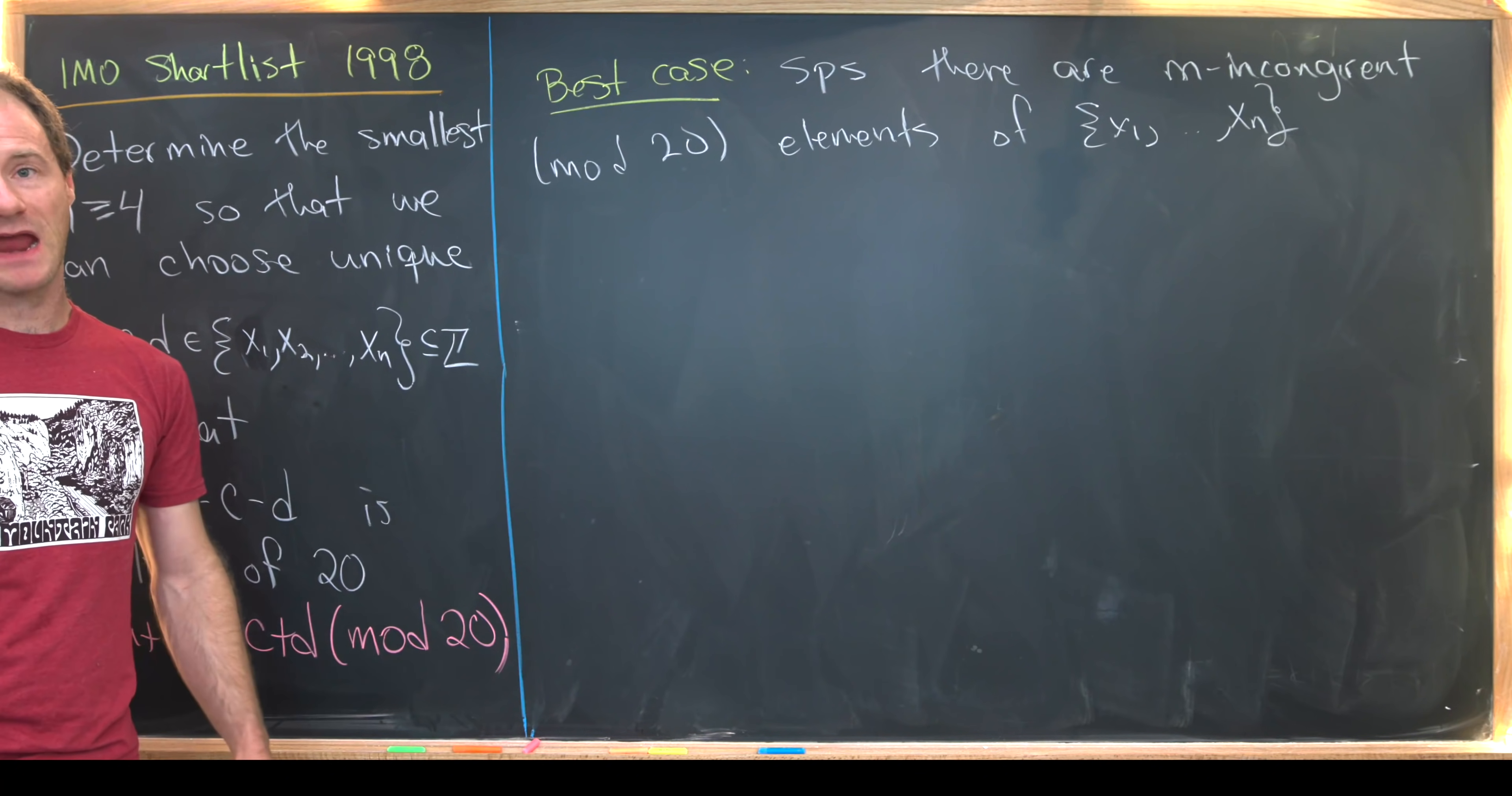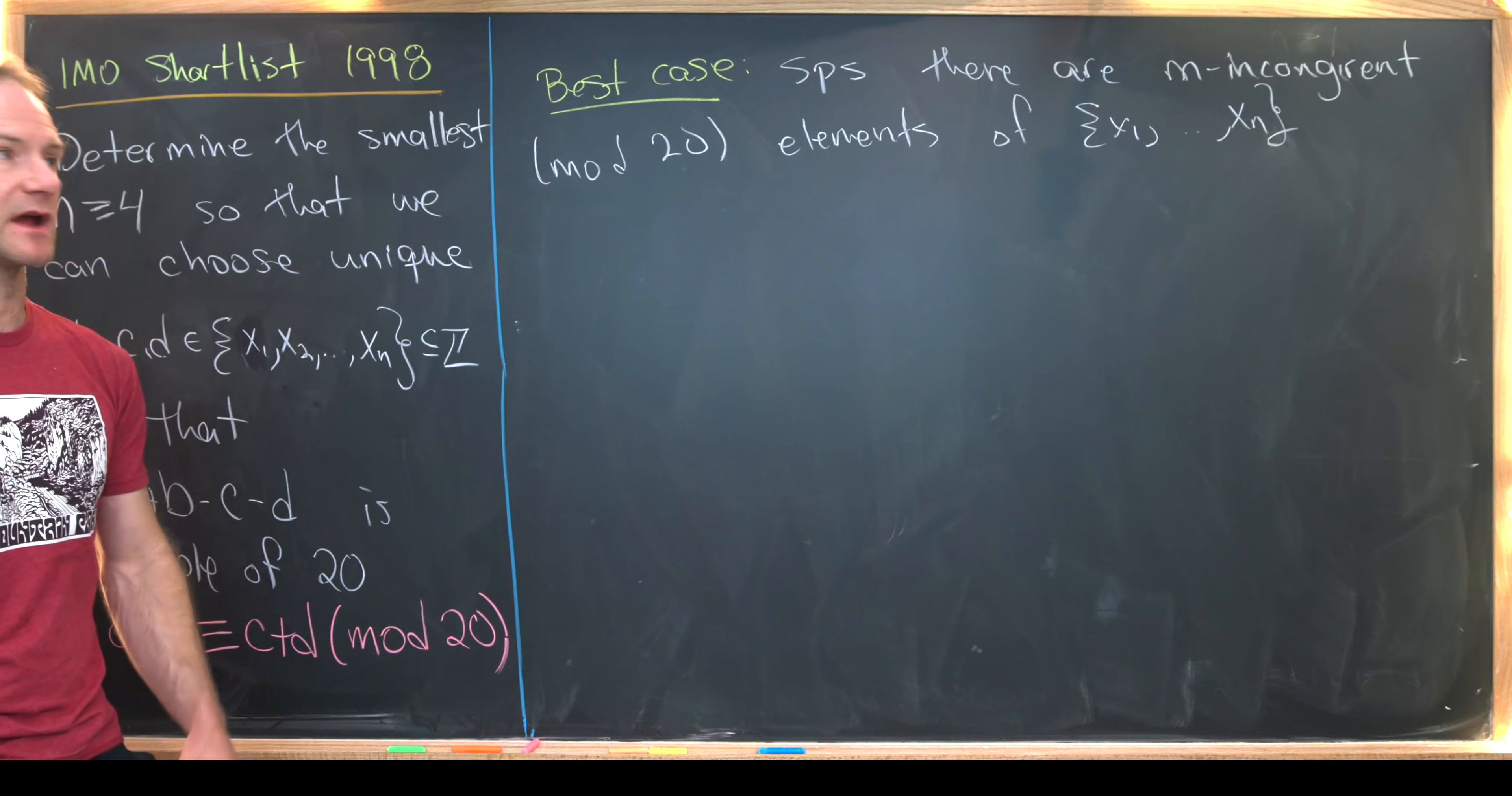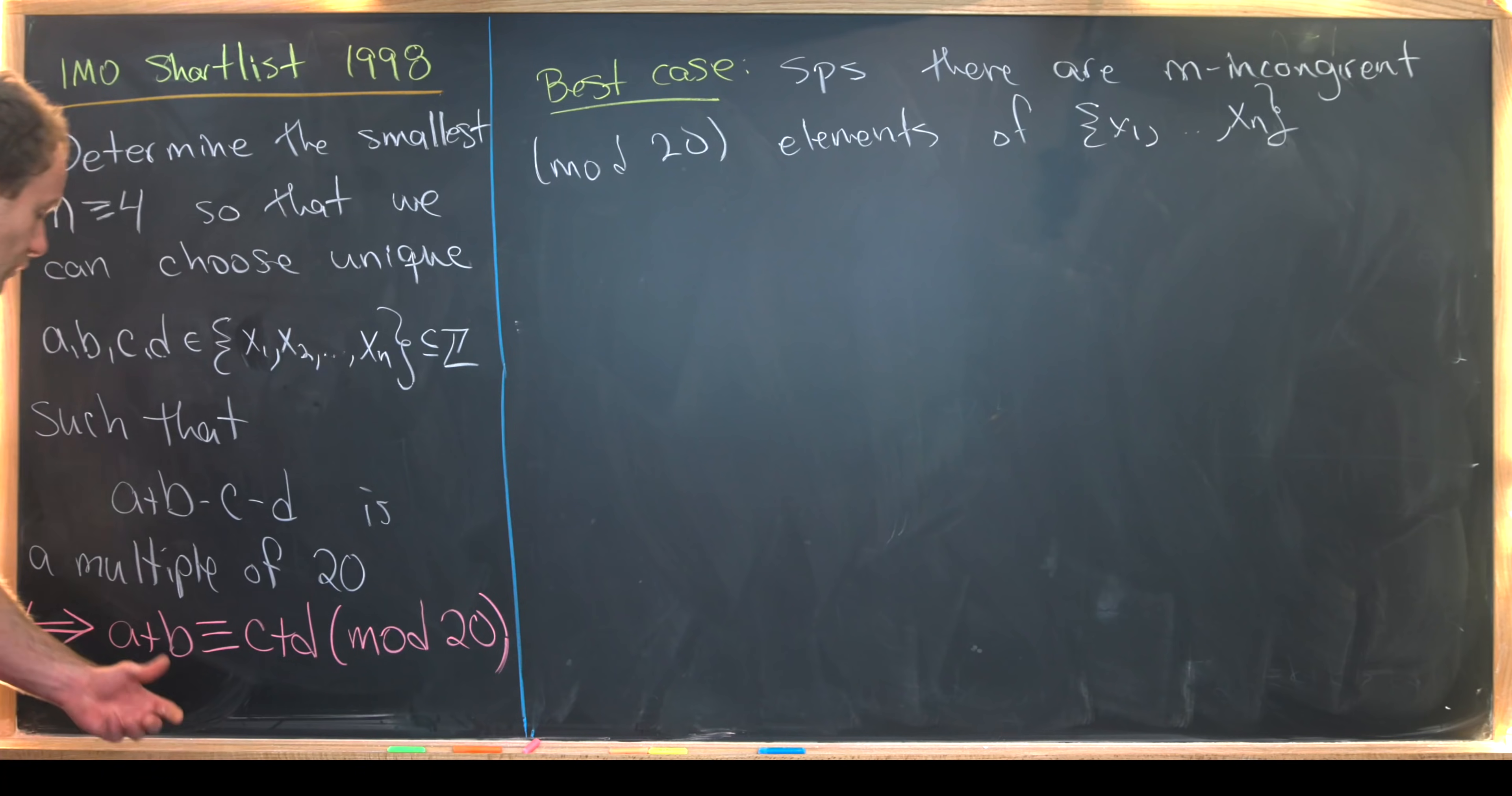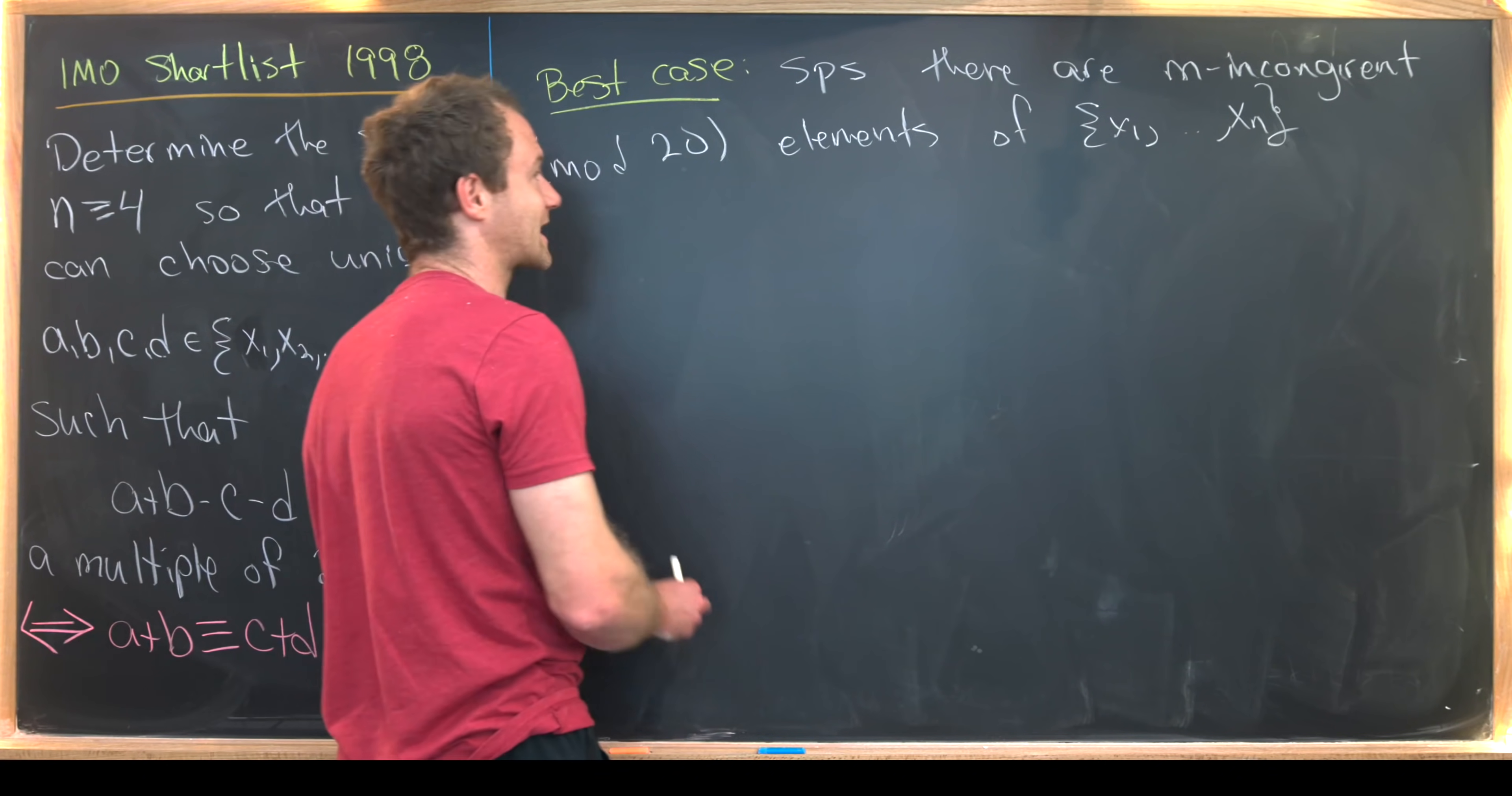Well, how many pairs of elements can we take from there? And why would we want to take pairs of incongruent elements? Well, that's because we've got a pair of two of these numbers over here and another pair over here. So let's maybe look at that question.